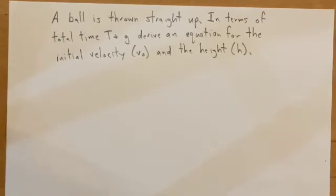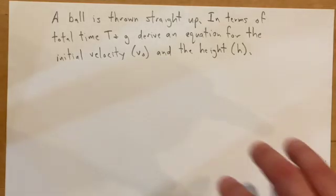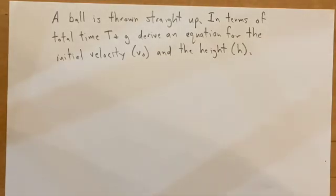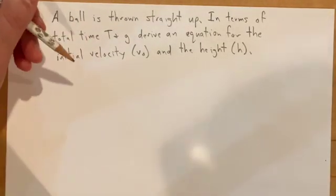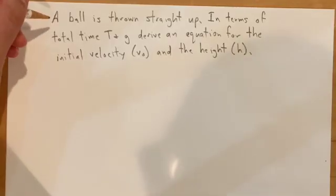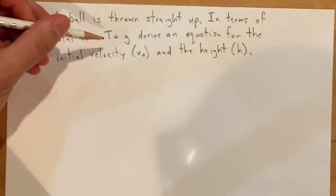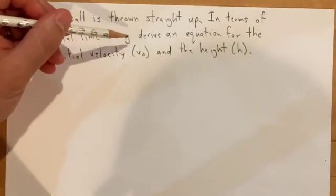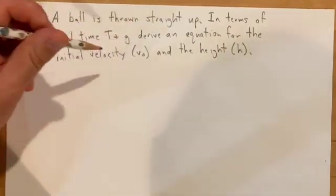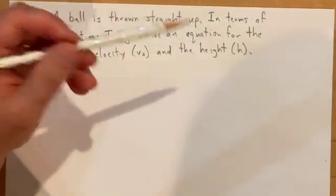Welcome to my low-tech studio. If you're having trouble deriving equations, let me help you. We have a ball thrown straight up. In terms of total time T and g, derive an equation for the initial velocity v₀ and the height h.